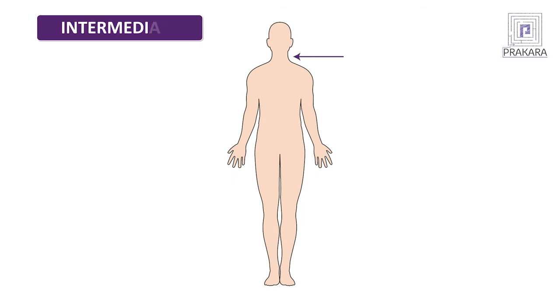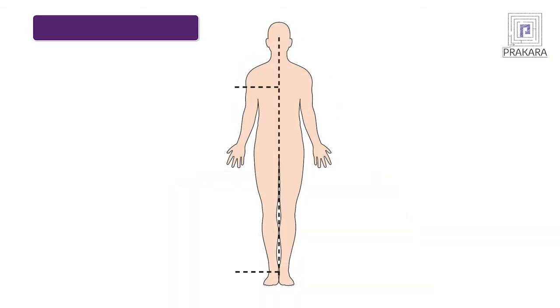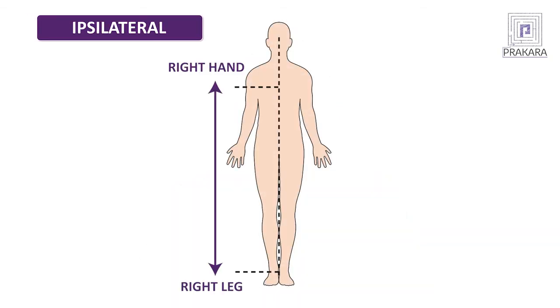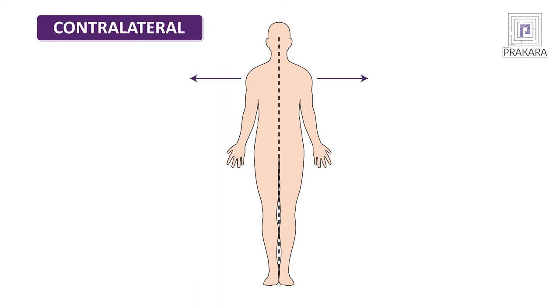The next directional term is intermediate, meaning when an organ lies in between two other organs. For example, the neck lies intermediate to the head and to the shoulders. Ipsilateral means when two organs or two body parts lie on the same side of the midline. For example, the right hand and the right leg are ipsilateral. Contralateral means when the two body parts lie on opposite sides of the midline. For example, the right hand is contralateral to the left hand.